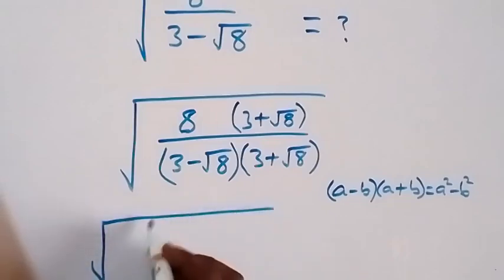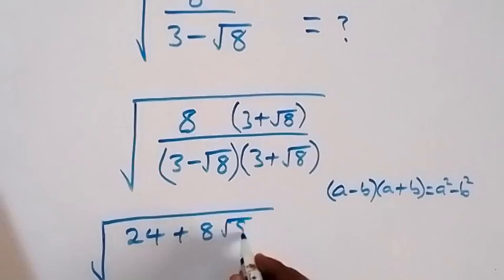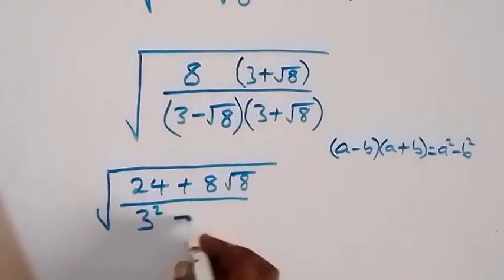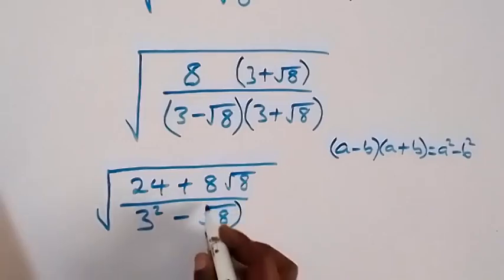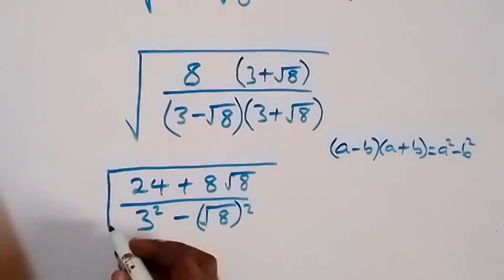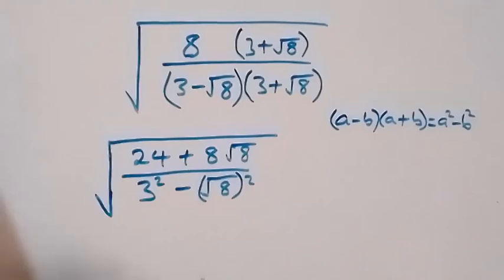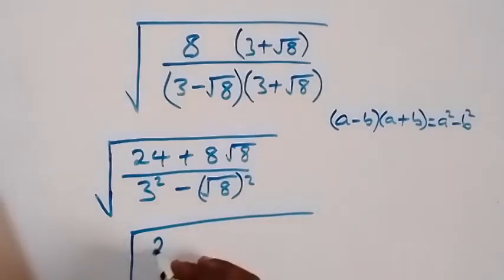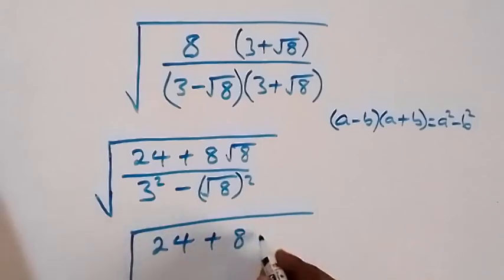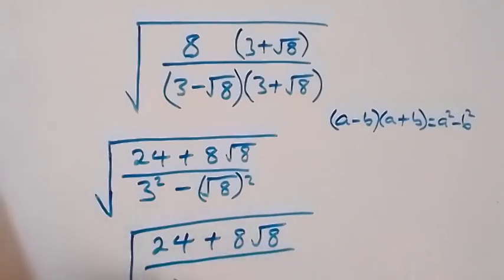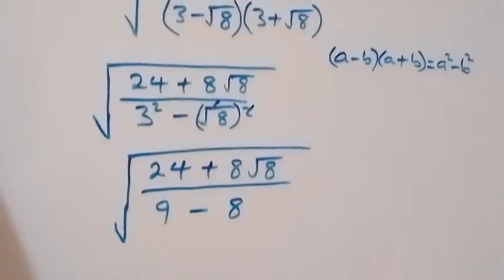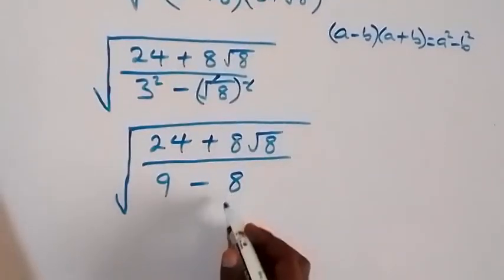Using this pattern, we expand in the form a squared minus b squared. This gives us the square root of 8 times 3, that's 24, plus 8 times root 8, all divided by 3 squared minus root 8 squared. The denominator becomes 9 minus 8, which equals 1.